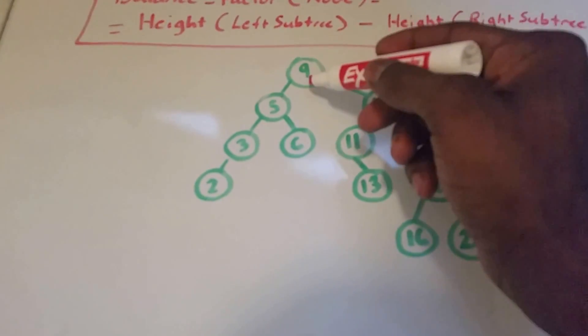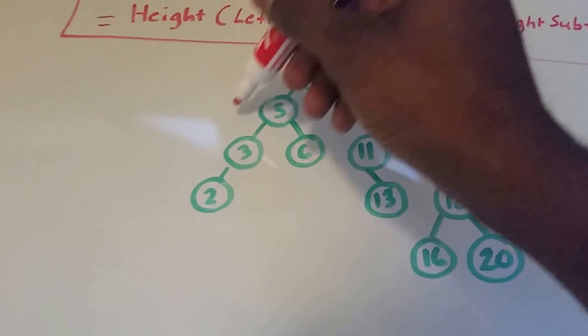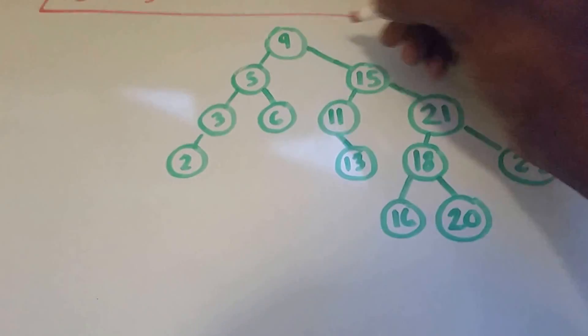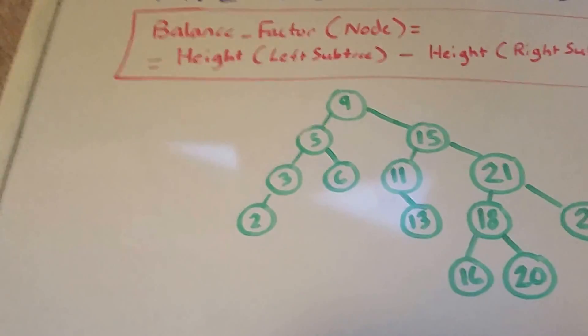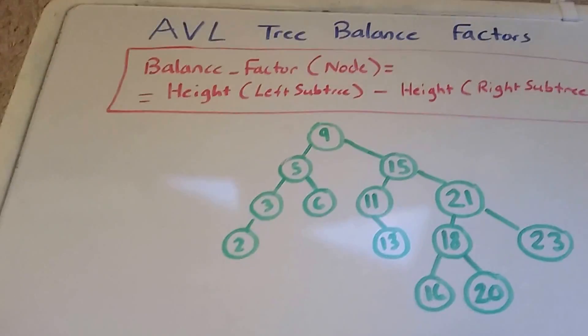So here we are currently at our node, which has the number 9. And the height of the left subtree is 1, 2, 3. So we know here that it's going to be 3. And I may have to change markers here, so give me one second while I change that.